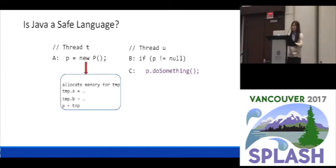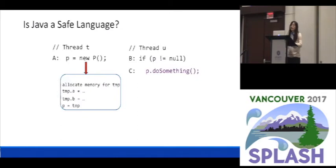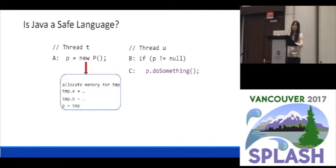The process of creating a new object actually consists of multiple steps. First, you have to allocate the memory for the new object, then you have to initialize the fields of the object, and only after that can you assign the pointer to the new object to the variable P. The problem with Java is that Java allows compilers and hardware to do certain optimizations that might reorder the ordering of instructions.